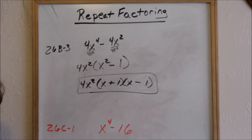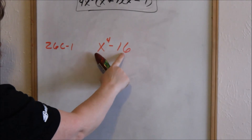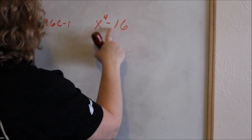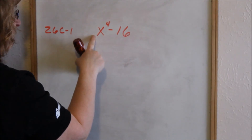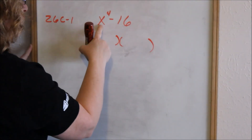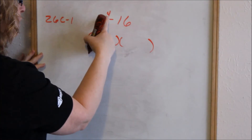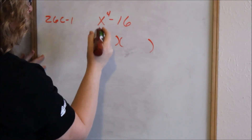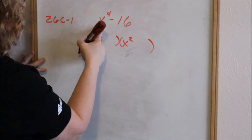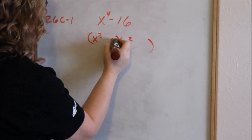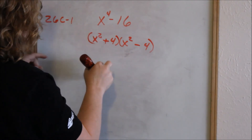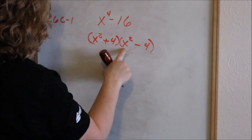Looking at 26C1. Again, when you only have two terms and a subtraction sign, look to see if it's a difference of two squares. Can you take the square root of x to the 4th? Yes. Can you take the square root of 16? Yes. Is there anything to factor out first? No. So you're ready. The square root of x to the 4th — when you take square roots of higher exponents, you cut the exponent in half — gives x squared. Check: does x squared times x squared equal x to the 4th? Yes. The square root of 16 is 4, so one factor is a plus and one is a minus: (x² + 4)(x² − 4). When you FOIL that back out, you get a negative 4x squared and a positive 4x squared, which cancels.